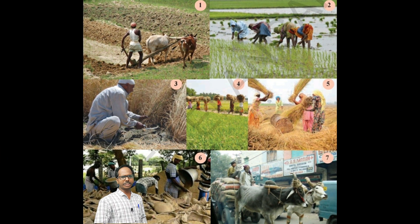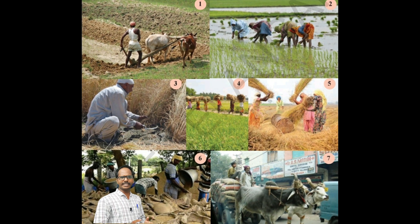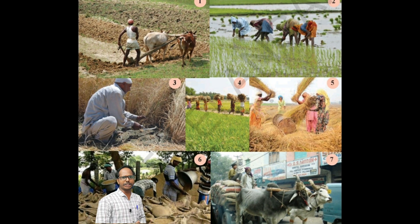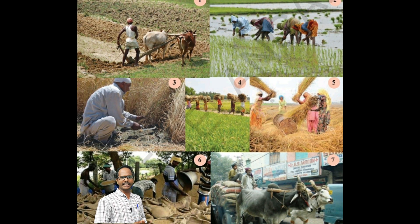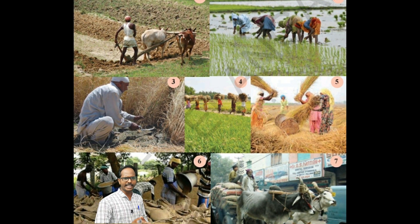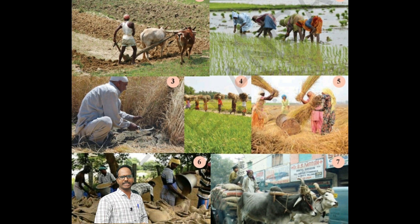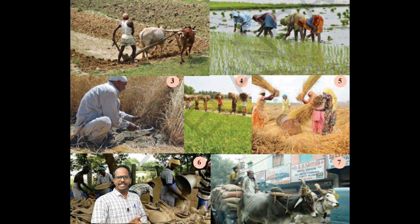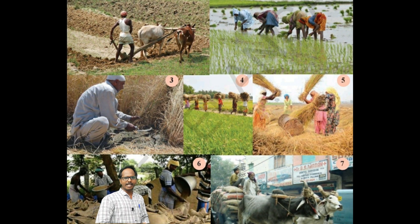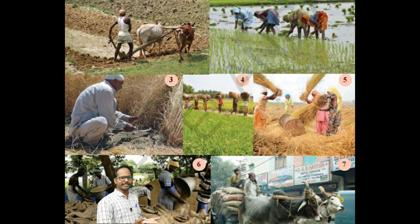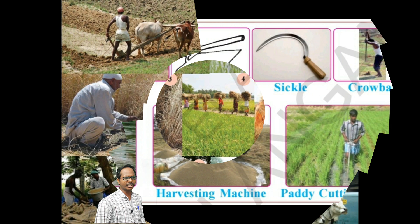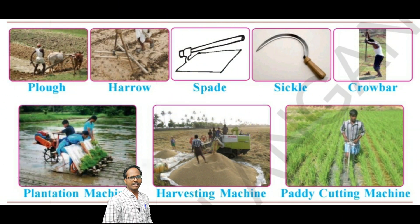In agriculture, transplantation or replanting is the technique of moving a plant from one location to another. Most often this involves starting a plant from seed in optimal conditions, such as in a greenhouse or protected nursery bed, and then replanting it in another — usually an outdoor or growing — location.